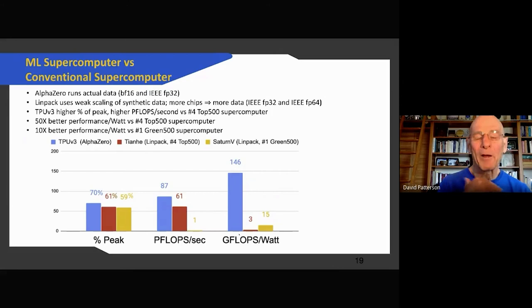How can we compare this domain-specific supercomputer to conventional supercomputers? Well, it's not going to be apples and oranges, but there's some similarity. We're going to use the AlphaZero program, the one that beats everybody at chess and Go. This is the production program using real data and it's using Brain Float 16 and IEEE 32. For supercomputers, the most common benchmark is LINPACK. This is a benchmark that isn't fantastic. You can scale up to any size, LINPACK, to keep all the processors busy. This is called weak scaling, and it's synthetic data, it's not real data. So the more chips you have, the more data you get. The other difference is they're not running the same benchmark, and also this is doing 32-bit and 64-bit floating point instead of 16 and 32.